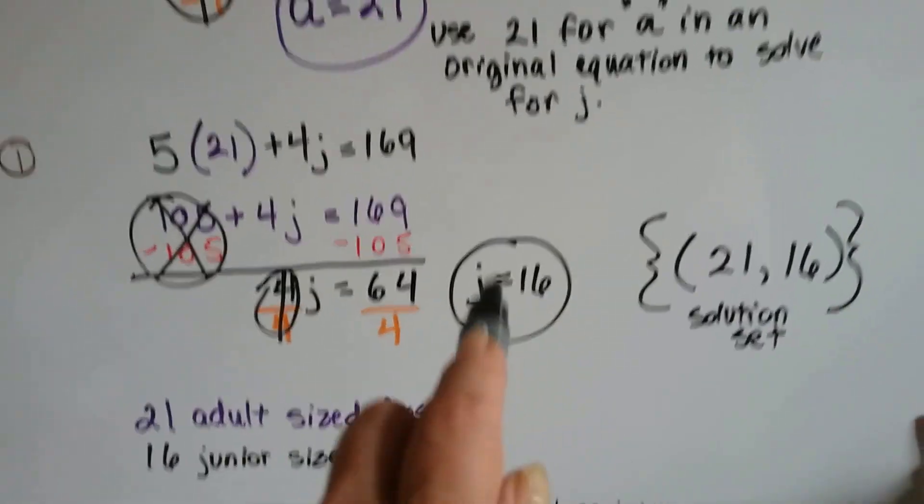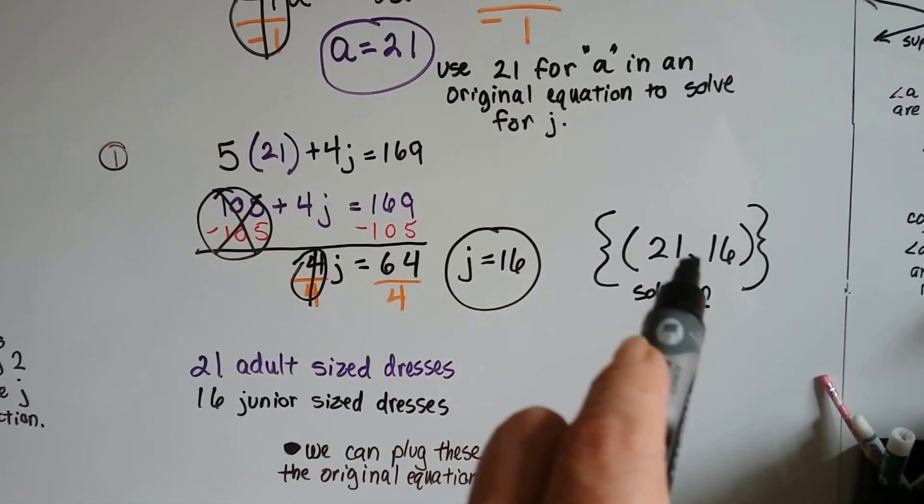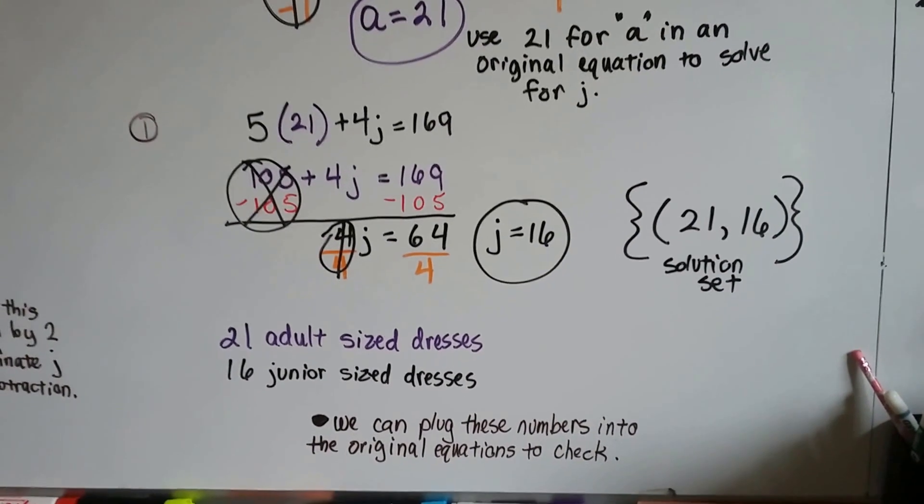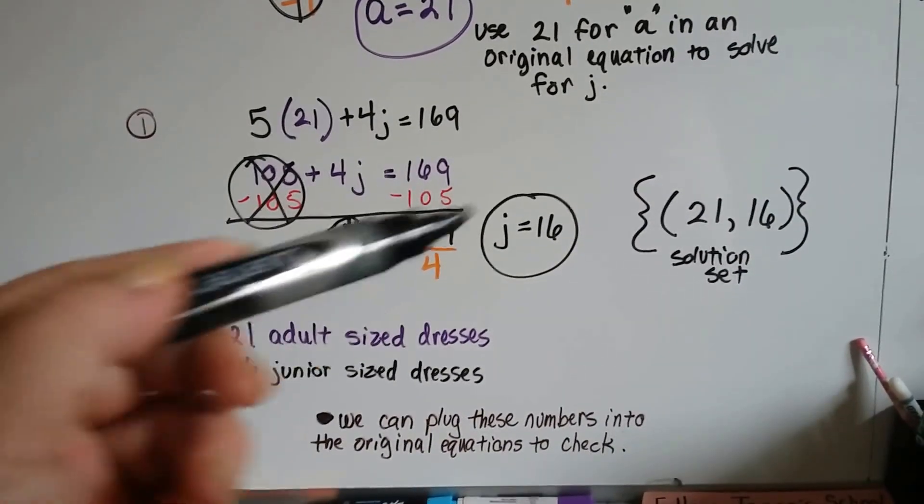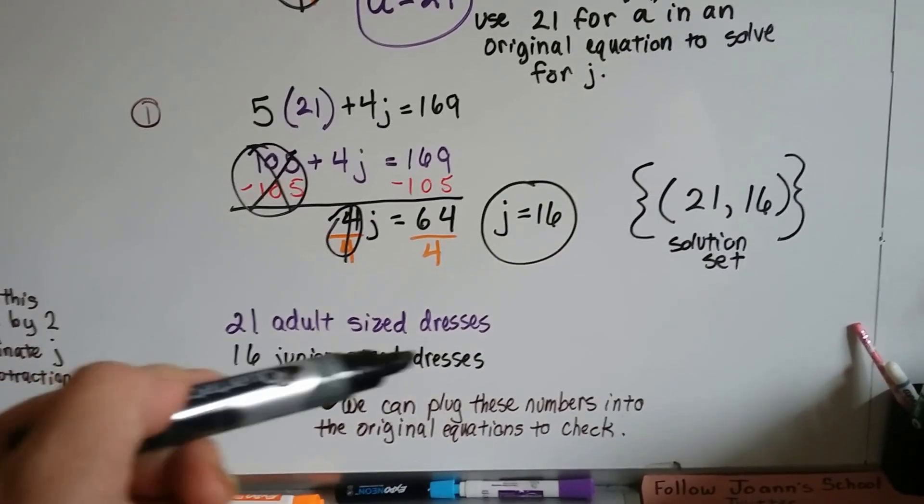Now we know that J is 16. And we know our solution set is 21 and 16. So it's 21 for A, adult size dresses, and 16 for J, the junior size dresses.